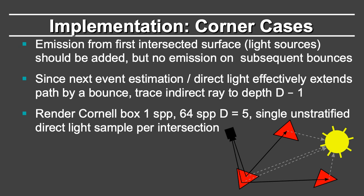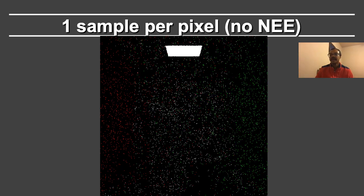At each intersection point, you shoot a single unstratified direct light sample. You are shooting a ray; at that point, you shoot one sample to the light source. The ray continues to another point and you shoot another sample to the light source. At each subsequent bounce, you shoot a sample to the light source. So at each bounce, you will get the direct sample from the light source. Here is a one-sample-per-pixel image without next event estimation that was shown earlier.